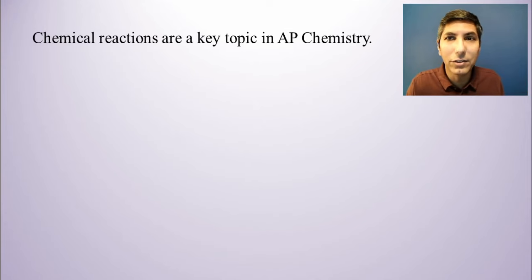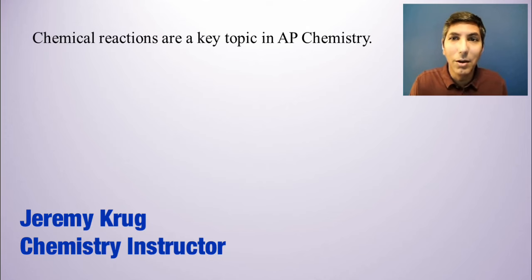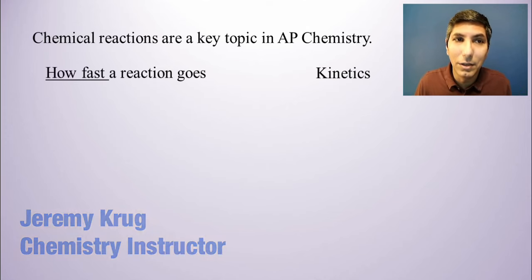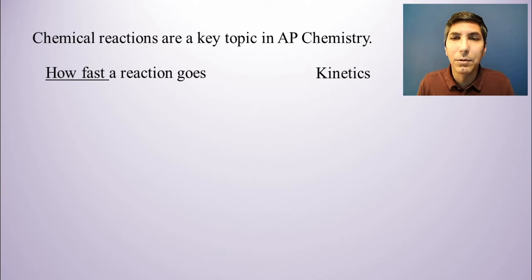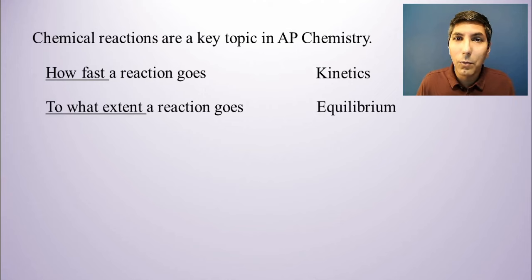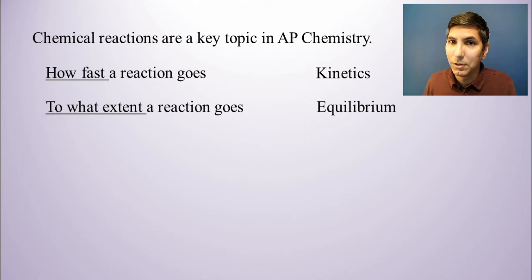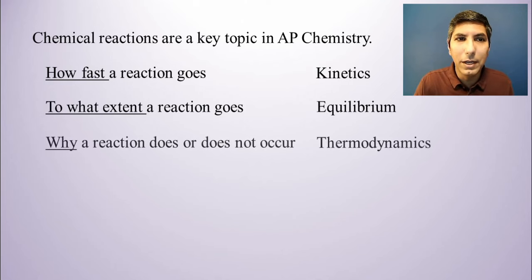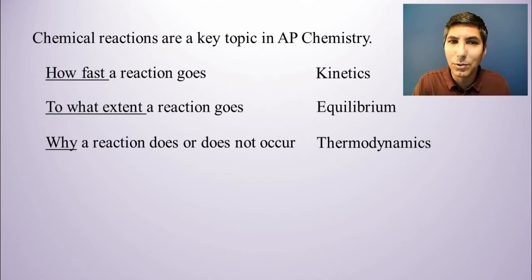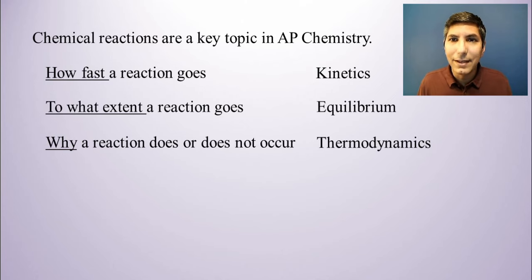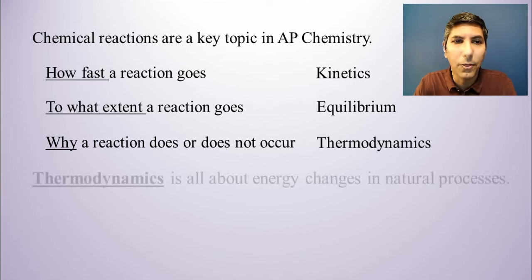We know that chemical reactions are a very important topic in AP chemistry and all of chemistry. In our last unit, Unit 5, we learned about chemical kinetics, which focuses on how fast a chemical reaction goes. We're going to be talking about to what extent a reaction goes in Unit 7, which is equilibrium. In this unit, we're going to be talking about why a reaction does or does not occur — that's thermodynamics, the heat change associated with a chemical reaction.